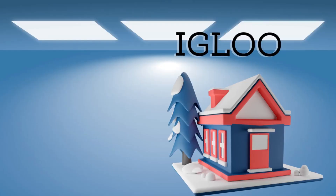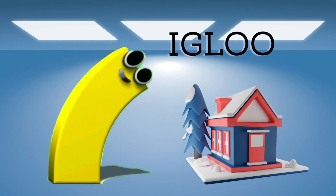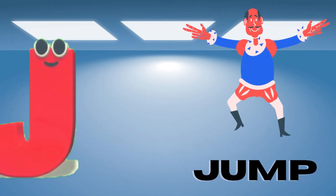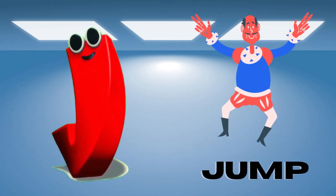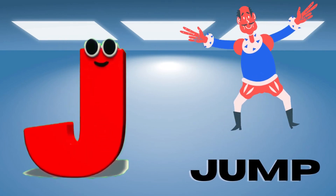I is for igloo, i-i-igloo. J is for jump, j-j-jump.